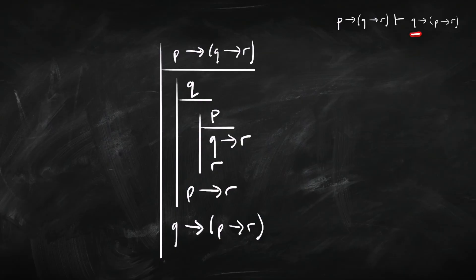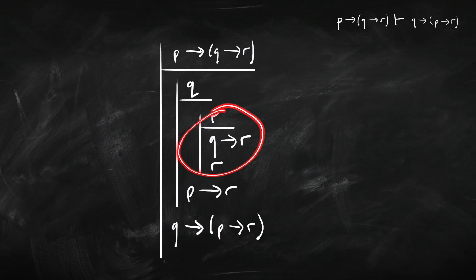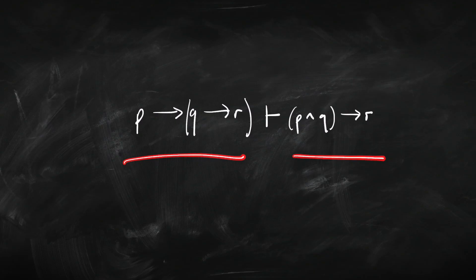To reiterate: our strategy was to assume the antecedent and try to prove the consequent, and we did that by assuming this antecedent and proving this consequent. We used conditional proof twice, one nested within another. Let's look at a similar example — same premise, but a different conclusion. The conclusion this time is 'if p and q, then r'.